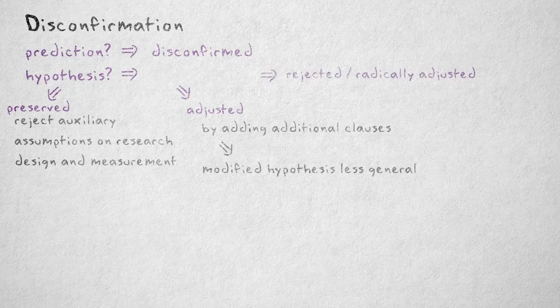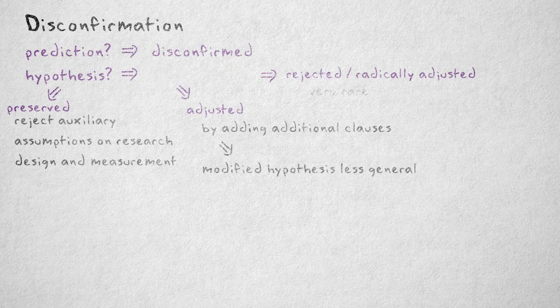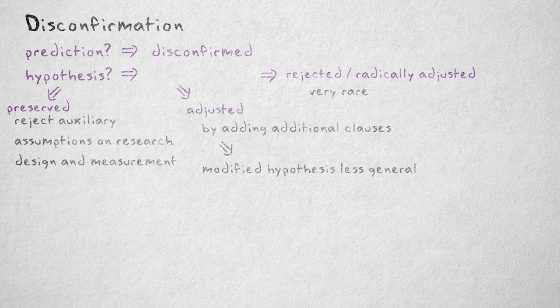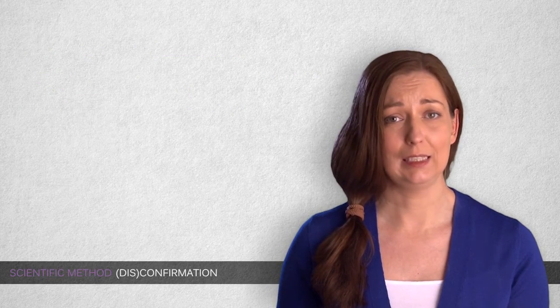An outright rejection or radical adjustment of a hypothesis is actually very rare in the social sciences. Progress is made in very small increments, not giant leaps.